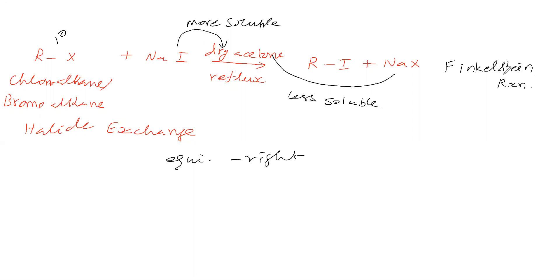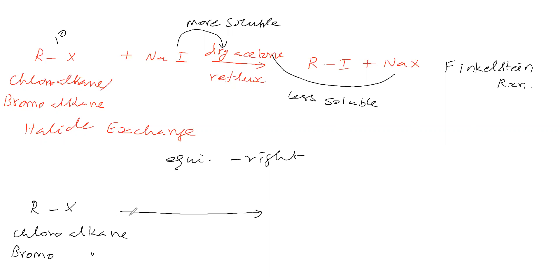Now we will go for another reaction. We take an alkyl halide — Chloro-Alkane or Bromo-Alkane — and treat it with Silver Fluoride (AgF), Mercurous Fluoride (HgF2), Cobalt Fluoride (CoF3), or Antimony Fluoride (SbF3). We will get RF, that means Fluoro-Alkane.